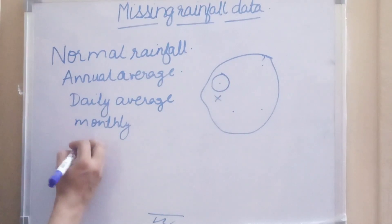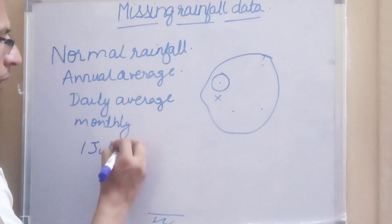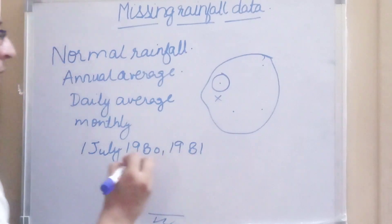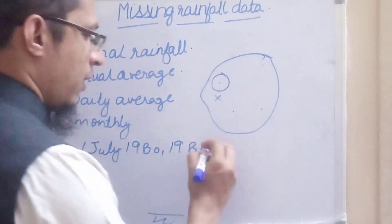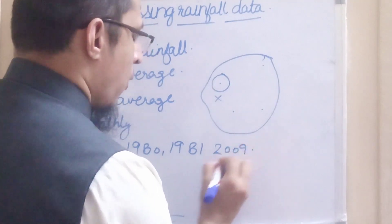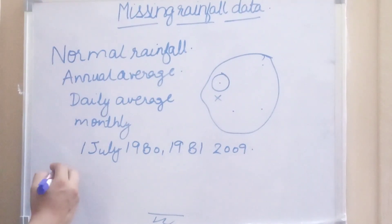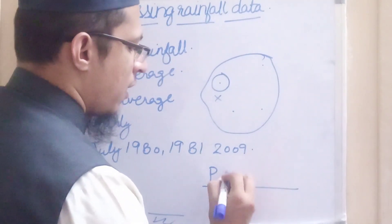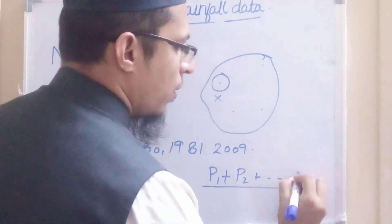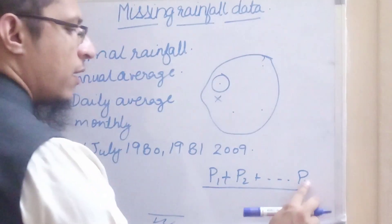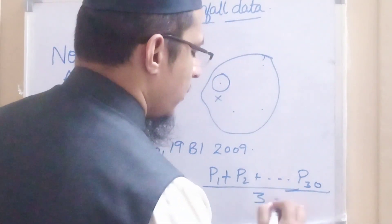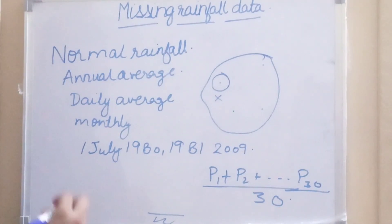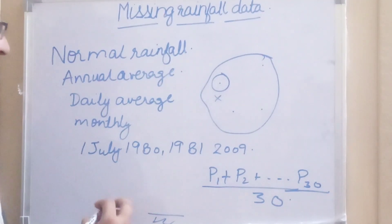Suppose this station is X and we have measured rainfall on 1st July 1980, then 1st July 1981, and so on up to 30 years till 2009. All the readings of 1st July will be averaged. So we have rainfall data P1 + P2 + ... up to n number of years (that is 30), divided by 30. This will give the normal daily rainfall for 1st July for that particular station, represented by N.